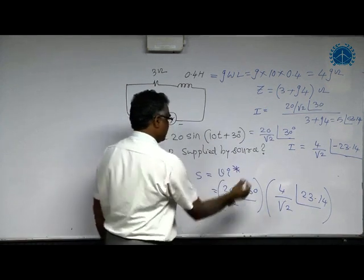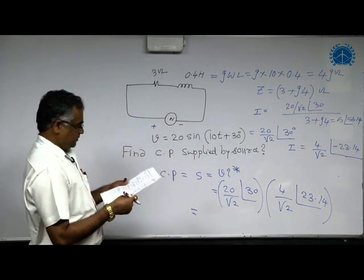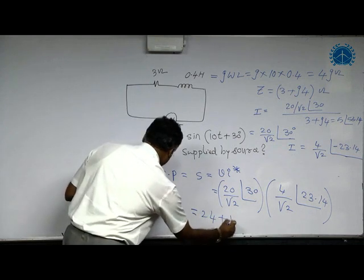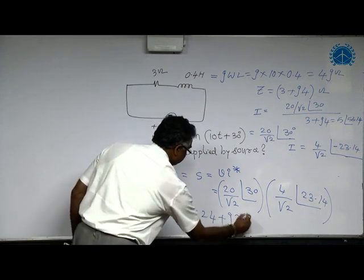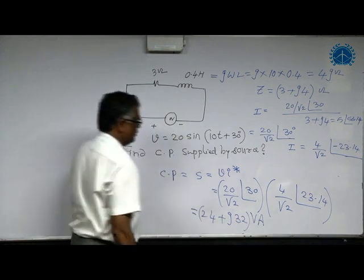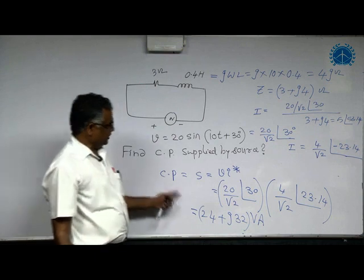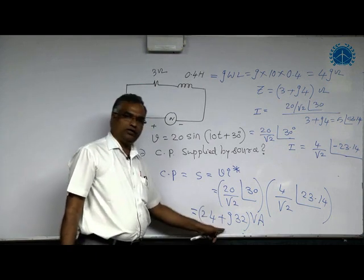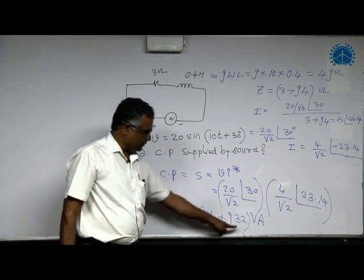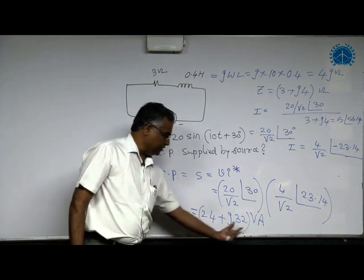Then this can be simplified easily. The answer is 24 plus J32, units are volt ampere. We need not convert to complex form; we can also keep it in polar form.